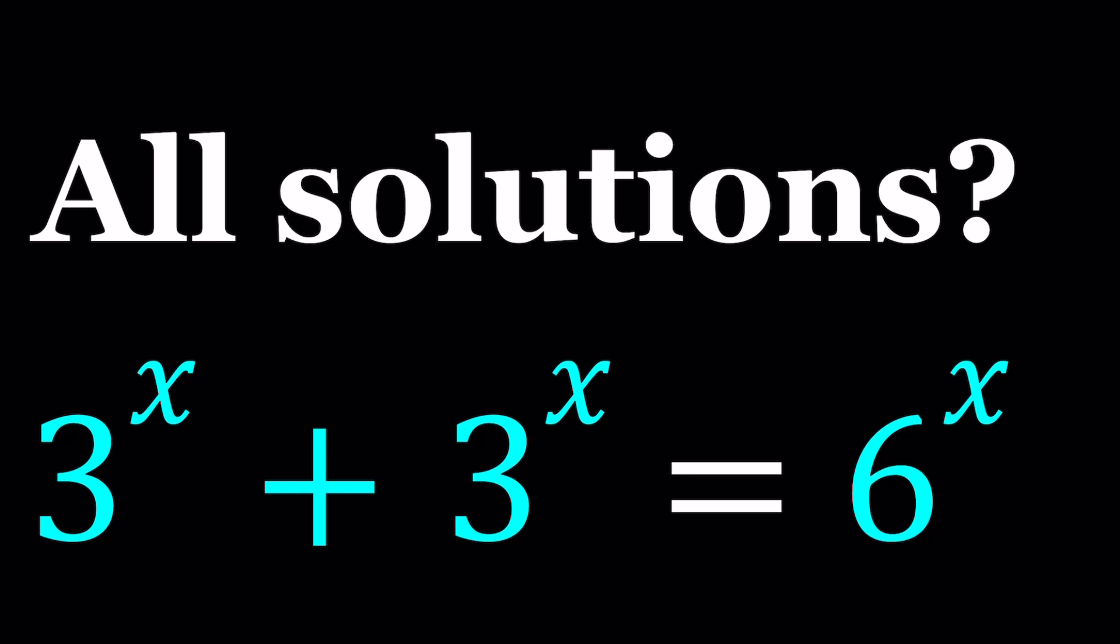When you add two exponential numbers with the same base, can we add the bases? Or can we add the exponent? In this case the bases were added obviously, 3 plus 3 equals 6, but is this always true?